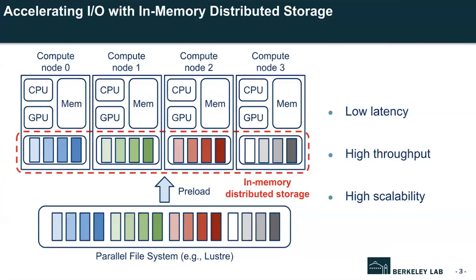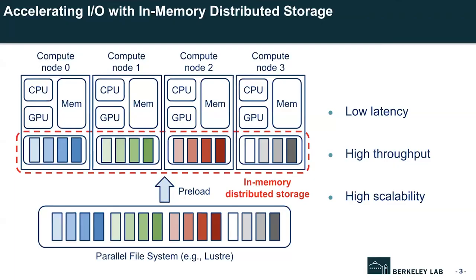As a result, in-memory distributed storage has become prevalent, where all parts of the dataset are loaded onto the local memory of each compute node. This approach allows processes to fetch data with low latency and high throughput. Cheap DRAM and fast networks with InfiniBand enable in-memory distributed storage with high scalability. Recent HPC environments have compute nodes with hundreds of gigabytes of DRAM, sufficient for most ML and AI applications to keep their whole dataset in memory and avoid disk storage access.